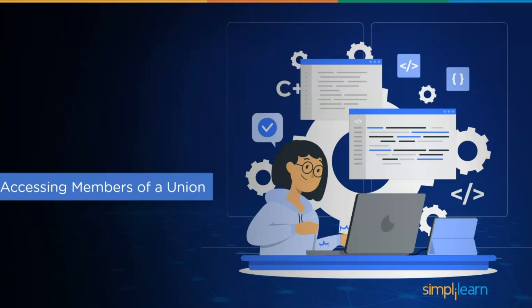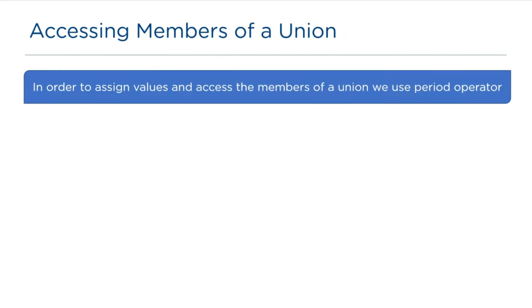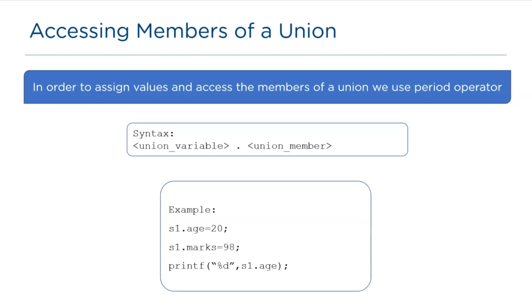Now, let's look at how to access the members of a union. We use the period operator to assign values and access the union members. The syntax that we follow to access the union members are union variable dot union member. For an example, let's see how to assign values. So, we have s1 as a variable name followed by a dot operator, then age is a union member and with the help of the assignment operator, we assign a value. And to access the member, we have an example s1 dot age.